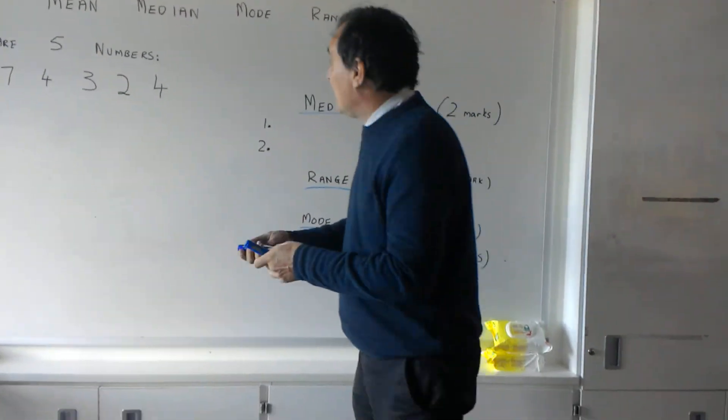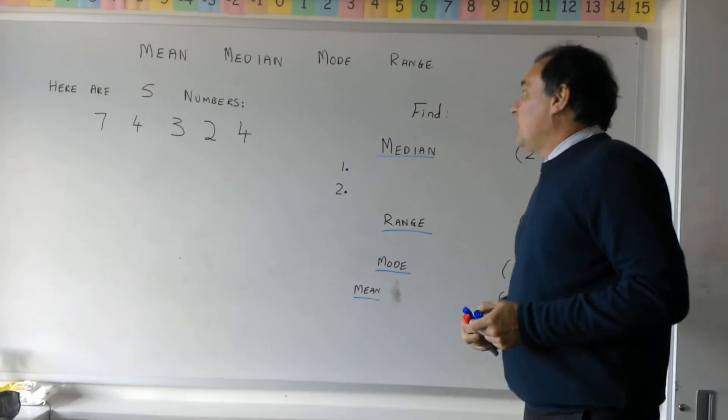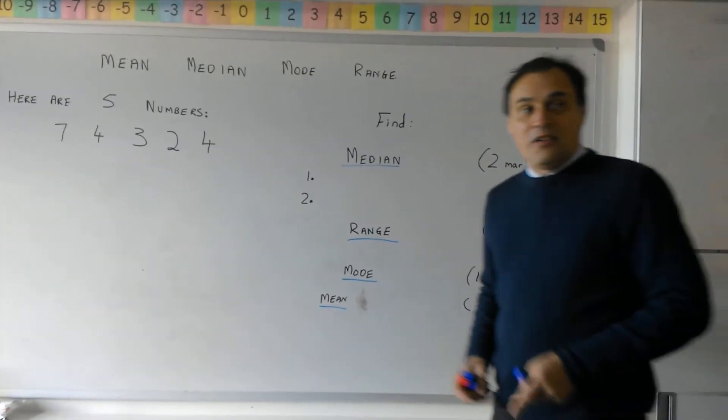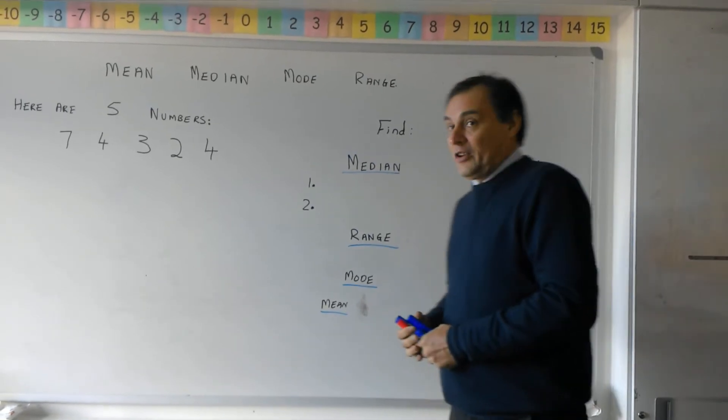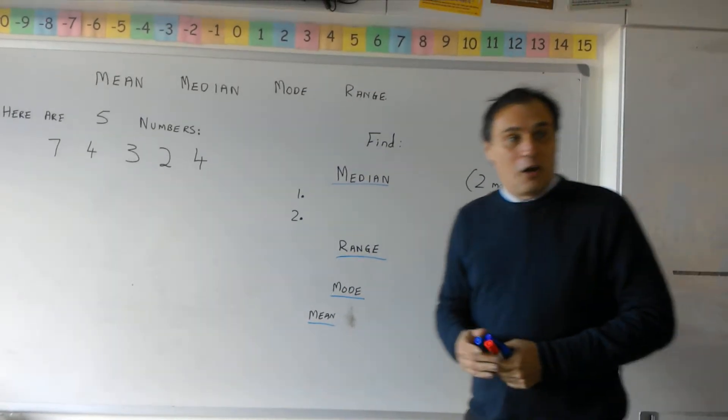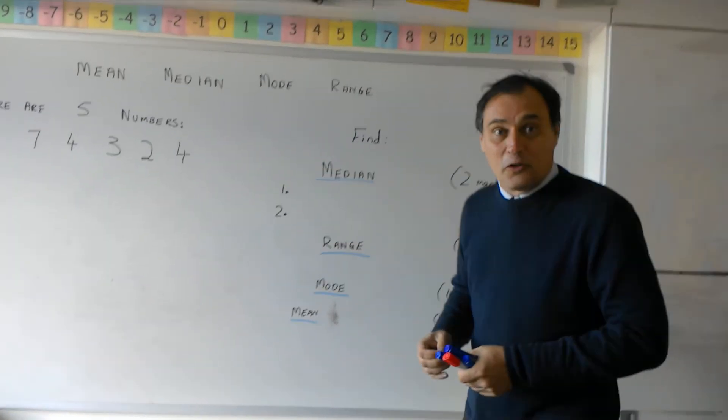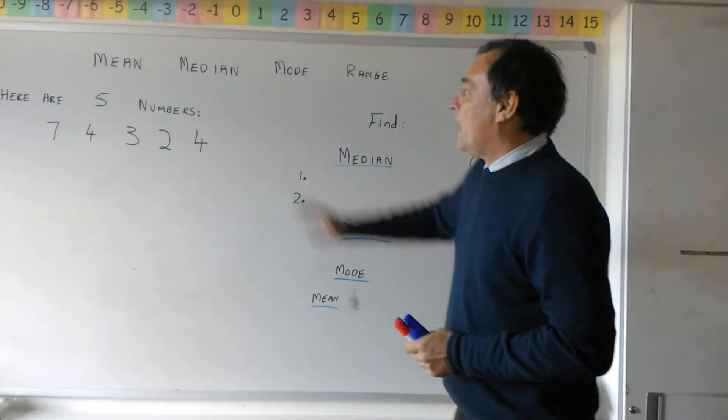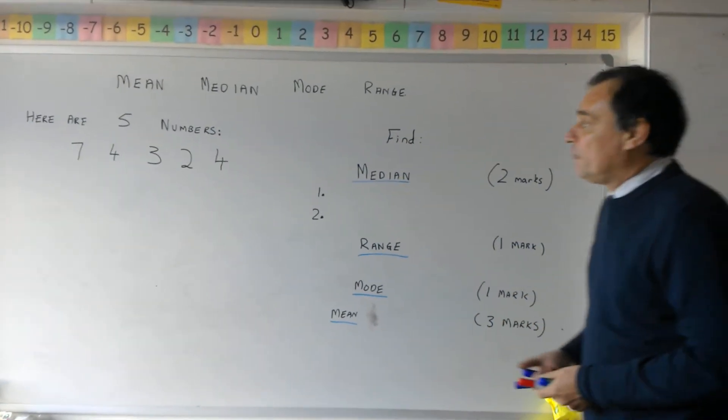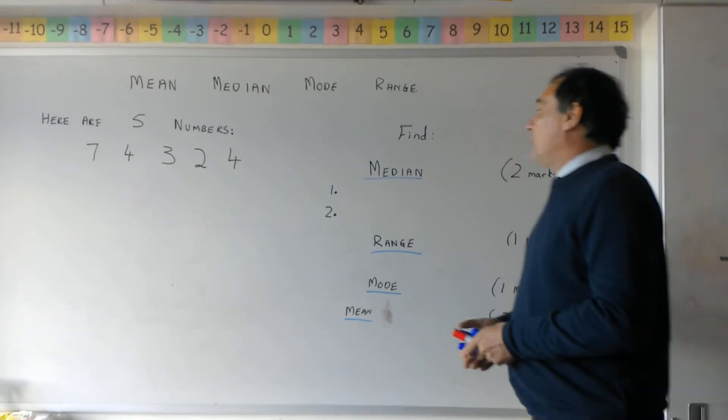So today we're going to be learning about mean, median, mode and range. Some people get these confused very often, but we've got some year seven volunteers here who don't know anything about it yet, so they're going to be taught as well but they're behind the camera. So here we've got five numbers: seven, four, three, two and four.